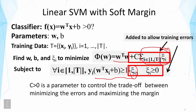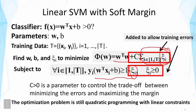Tuning C is similar to choosing k in k-nearest neighbors — it's generally done by cross-validation, examining empirical data to find the value that optimizes performance. With this modification, the problem remains a quadratic program with linear constraints, and standard optimization algorithms can solve it. Once W and b are obtained, we have a well-defined classifier ready for categorizing new text objects.